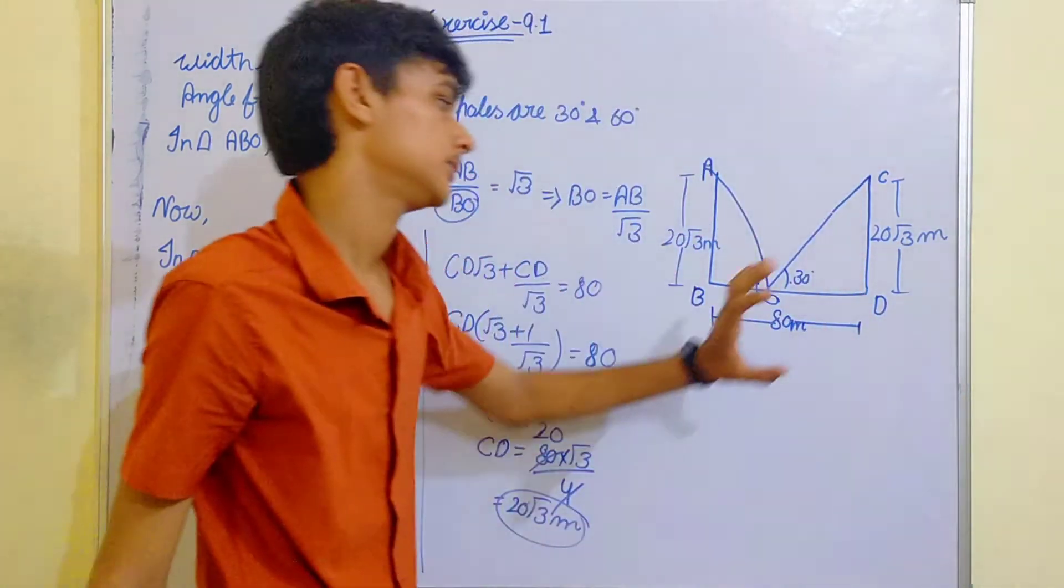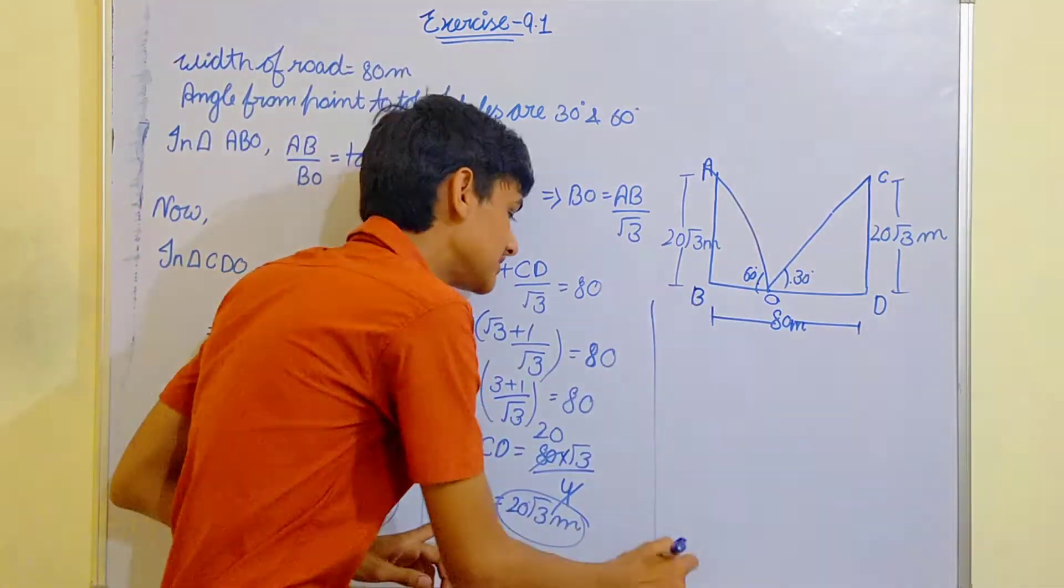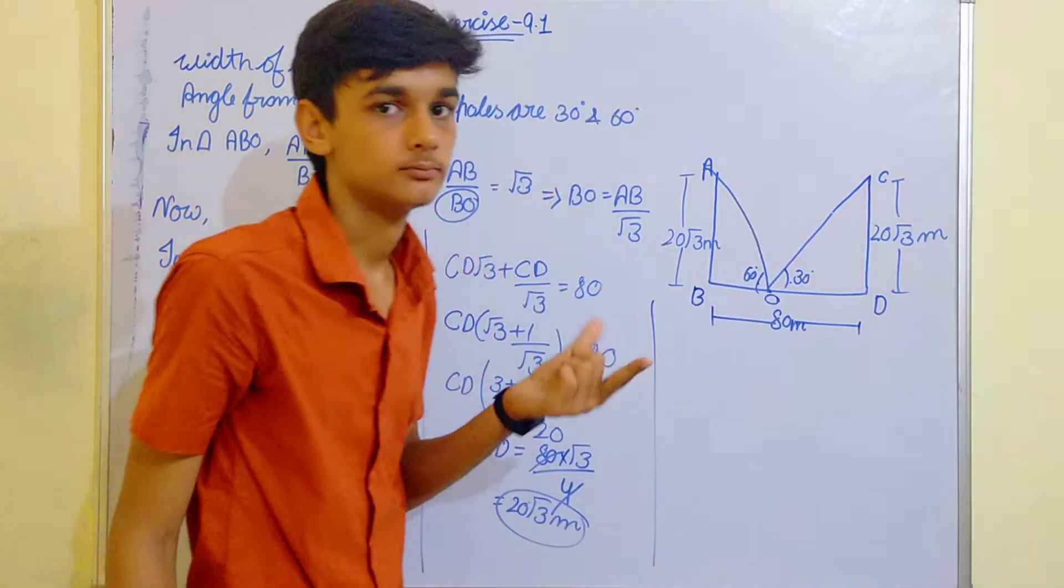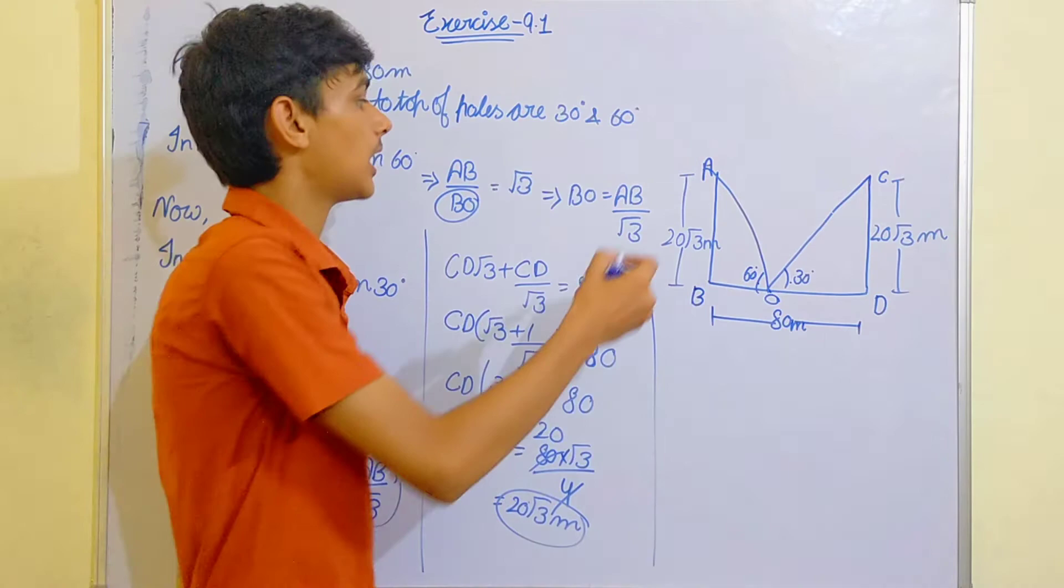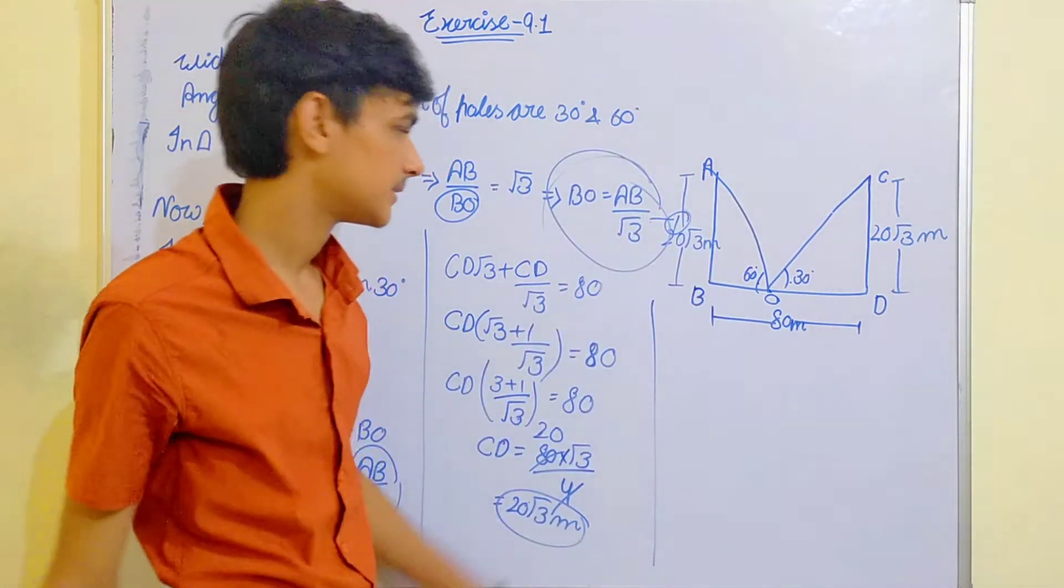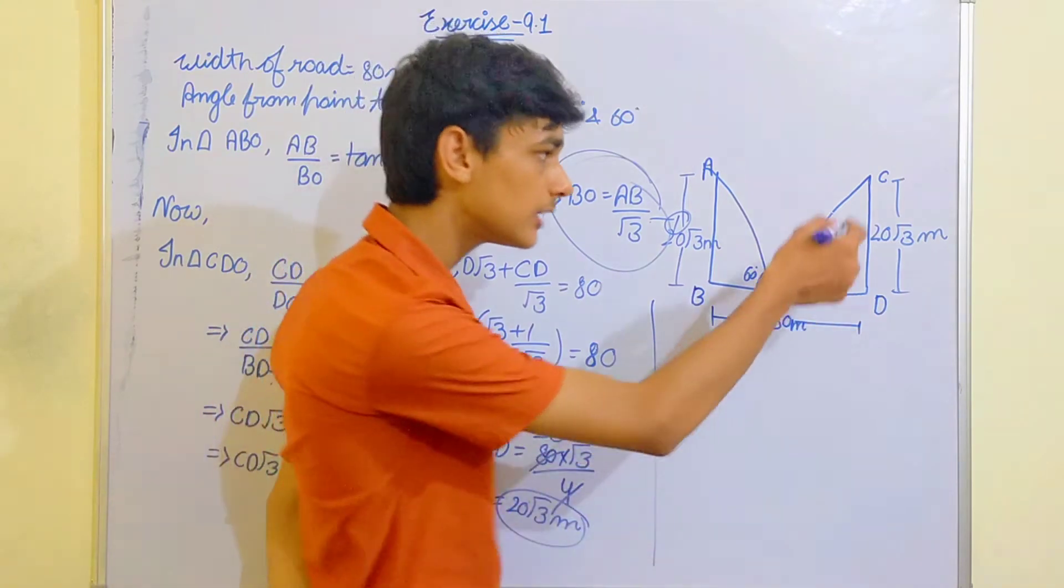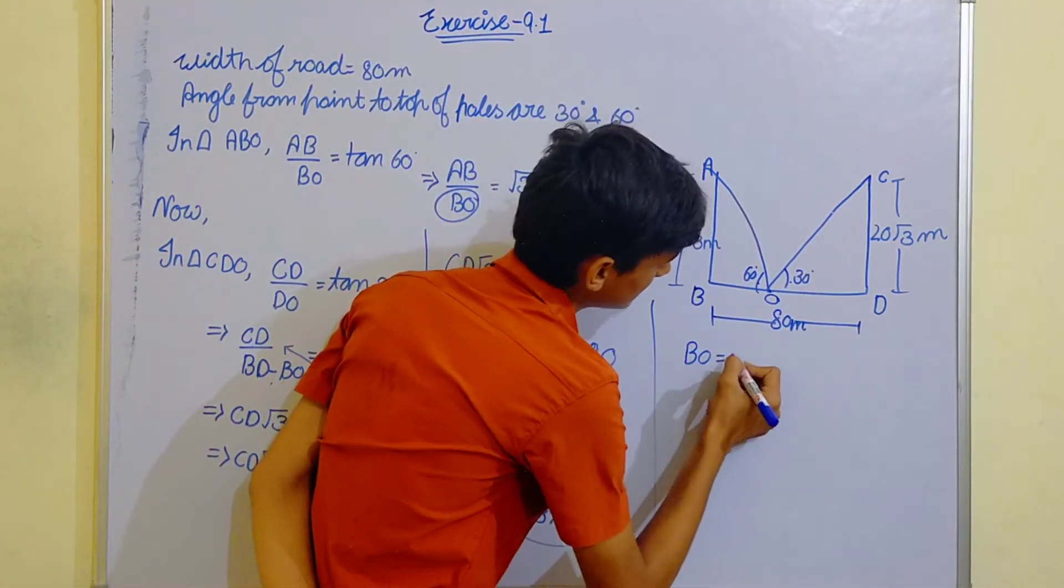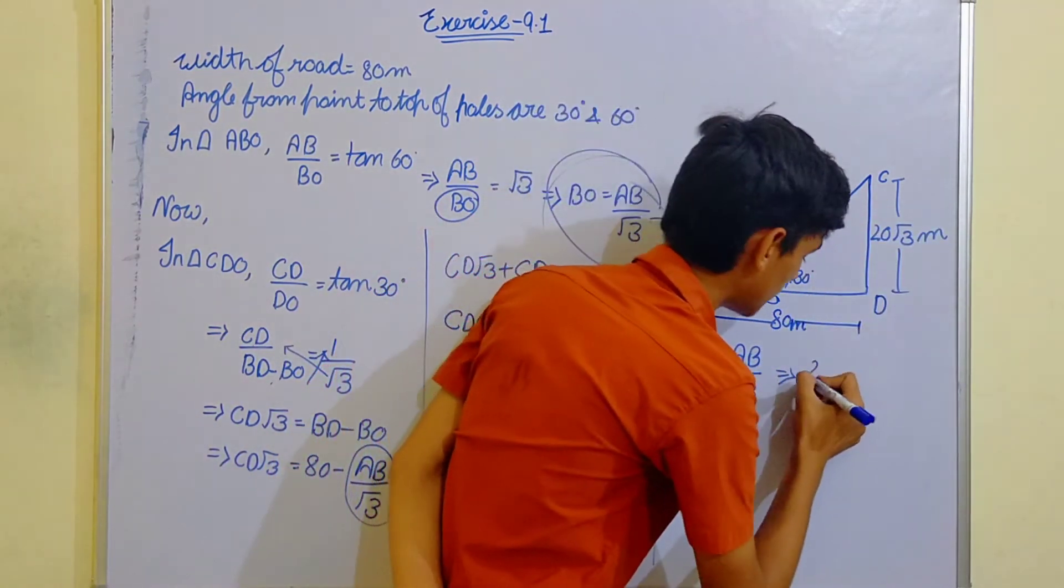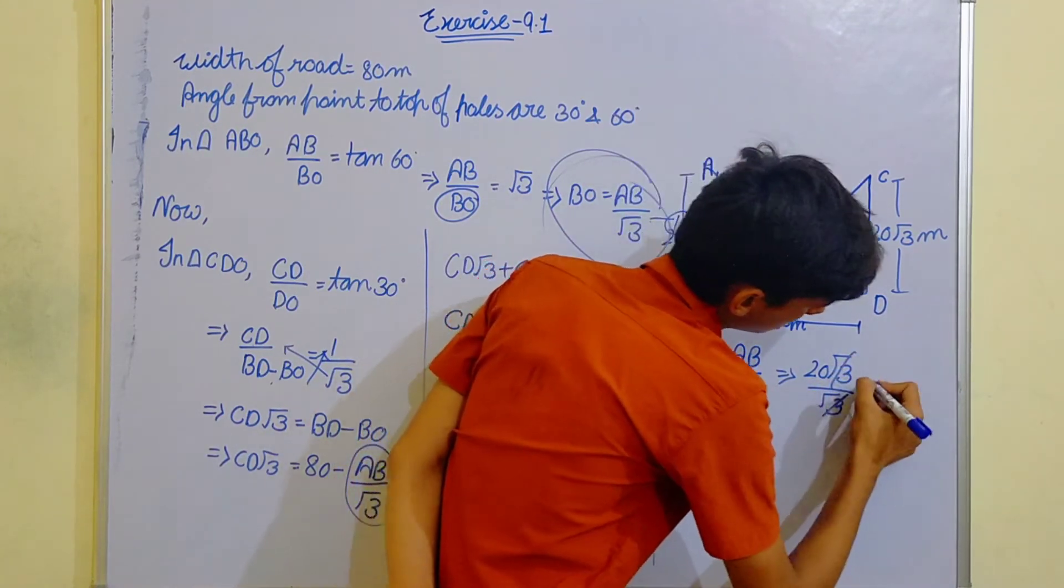Clear? Half part is clear. 20 root 3. So, BO is equal to FB by root 3. Now, put the value of FB. FB is 20 root 3. Divide by root 3. Cancel, we get 20 meter.